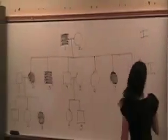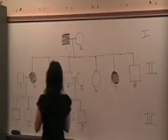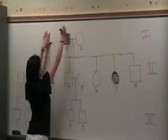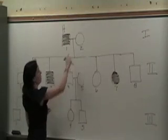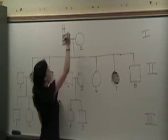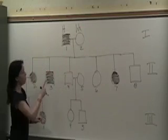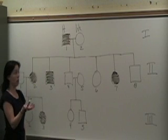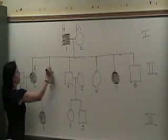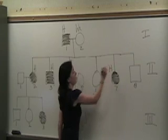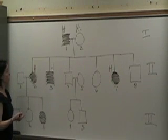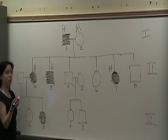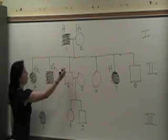If we look in generation 2, what do I know this individual has to have since they are colored in? They have to have a big H for Huntington's disease. I don't definitely know what their second letter is yet. This person here does not have Huntington's disease, so they have to be homozygous recessive. All of these individuals that are colored in in generation 2 have to have a big H. They got a big H from their dad. What did they have to get from their mom? The only thing that she can give them is a little h.